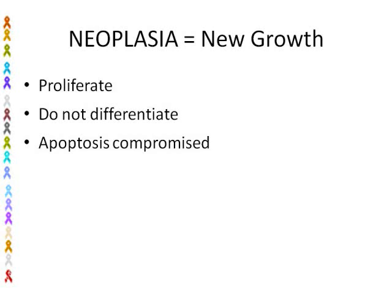Neoplasia means new growth. Neoplasias can proliferate to form new tissue. They do not wait for signals from the body that new tissue is needed — they just go ahead because they're ignoring the signals to stop dividing. These cells often do not mature normally; they don't differentiate to do the job the tissue is supposed to do. And they do not die off through apoptosis to keep the total number of cells constant.